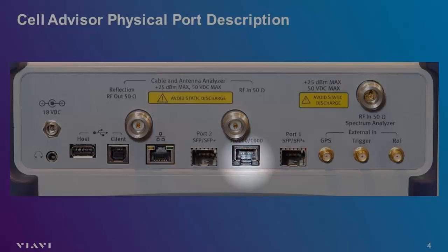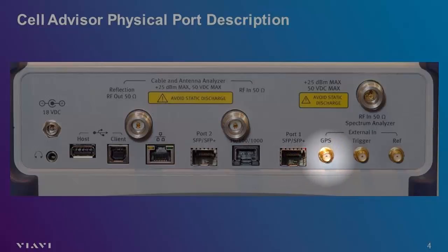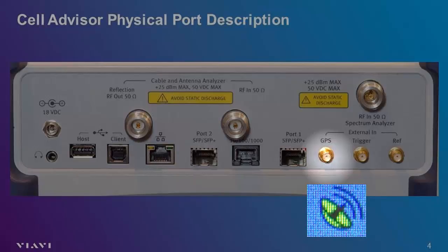A GPS receiver port is located immediately to the right of the SFP ports. Connecting a GPS antenna to this port allows the instrument to determine location and stabilize the unit's internal oscillator. Once the antenna is connected, it may take a few minutes for the GPS receiver to locate satellite signals and lock on to those signals. Lock is achieved fastest when the antenna has a clear view of the sky. The unit will display a satellite dish icon at the top right of the display when the GPS antenna is connected. If this icon is yellow, the unit has not locked; the icon will turn green once the unit has achieved lock.